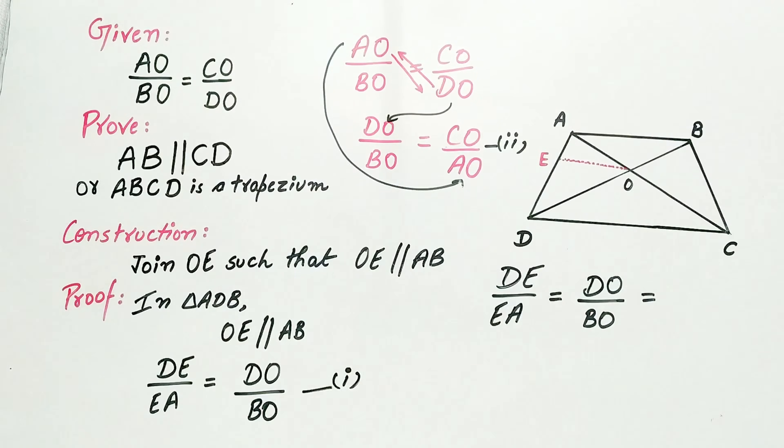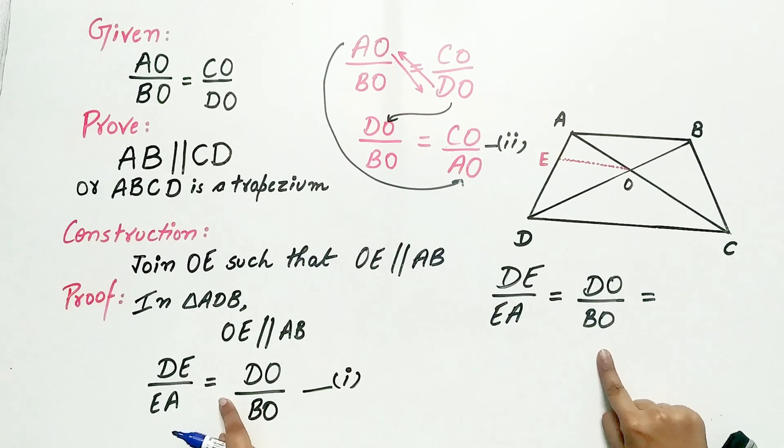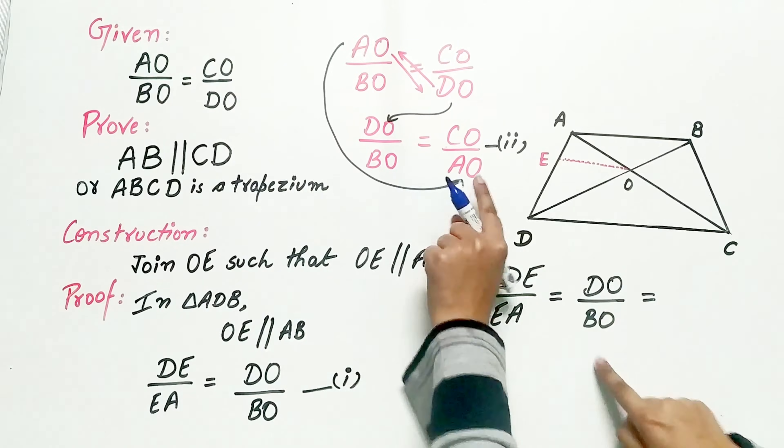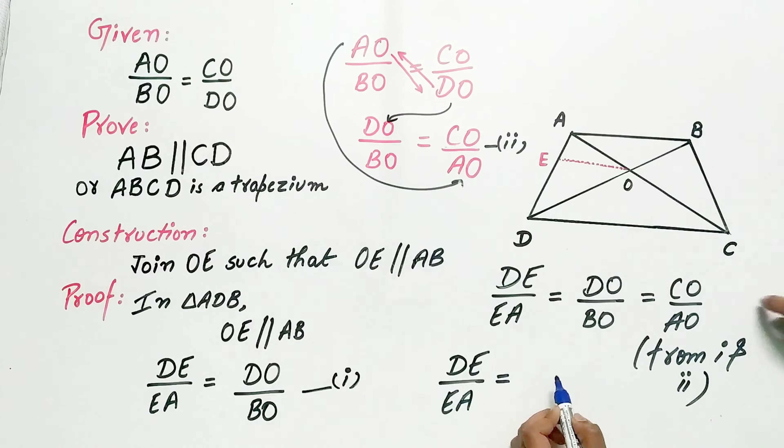Now try to understand, DE by EA is equal to DO by BO, and DO by BO is equal to CO by AO. So can I say DE by EA is equal to CO by AO.